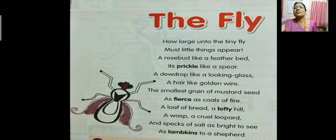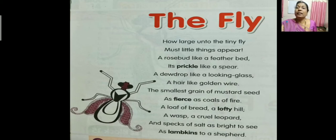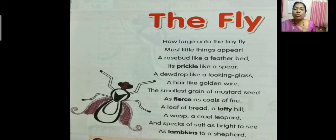What things does the poet imagine the fly to look at? The fly looks at the rose bud, then prickle, then dew drop, then a hair, then loaf of bread, then wasp — these are the things which the fly sees. How do those things appear? The rose bud appears like a feather bed, prickle like a spear, dew drop like a looking glass, hair like a golden wire, loaf of bread like a lofty hill, and wasp like a cruel leopard.